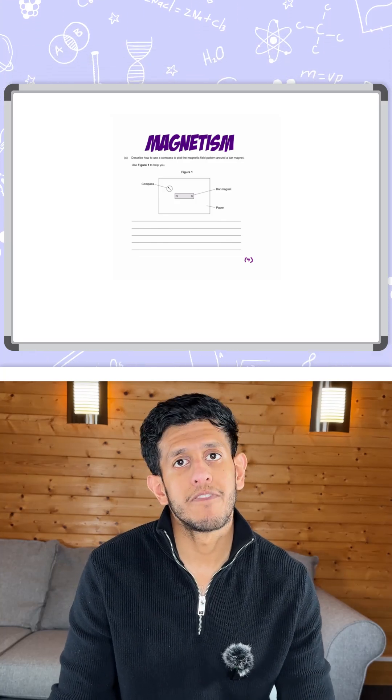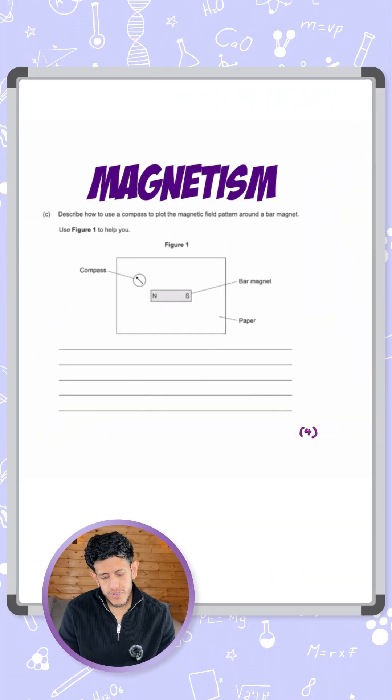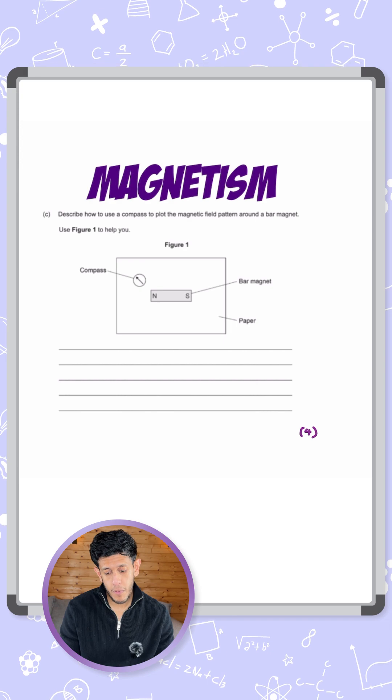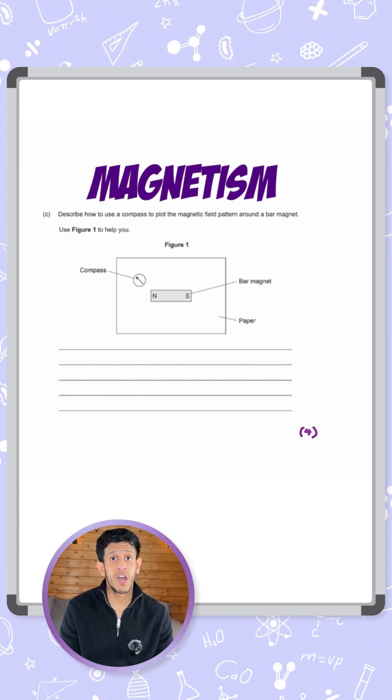Here we have a question looking at the experiment for magnetism. It says describe how to use a compass to plot the magnetic field pattern around a bar magnet and use figure one to help you.